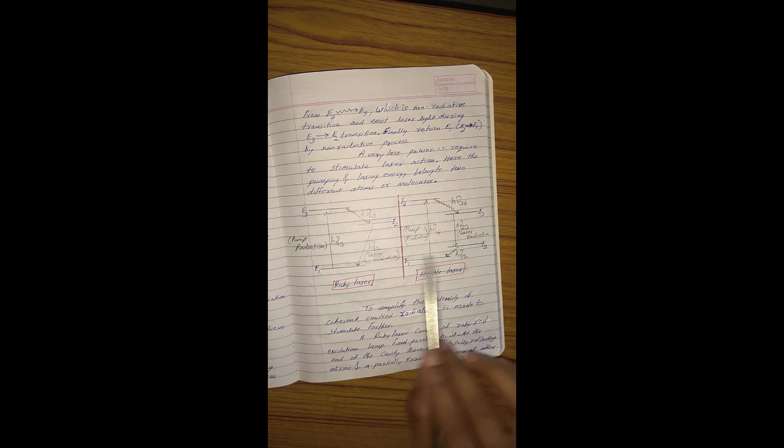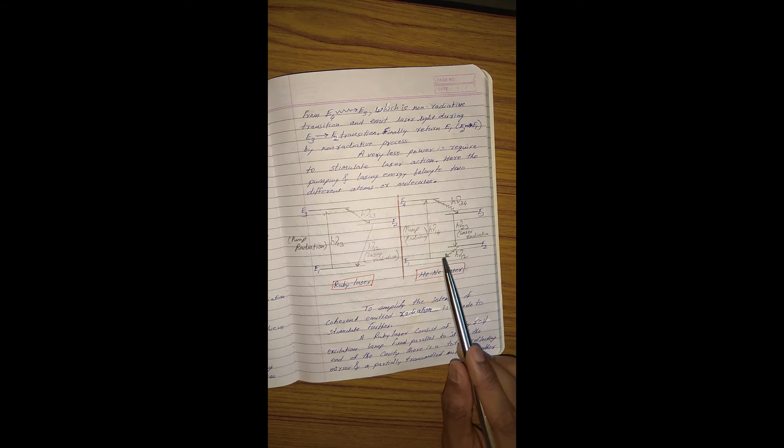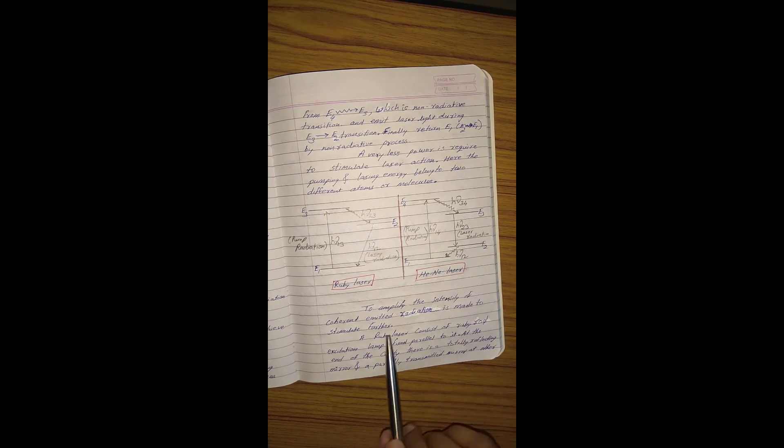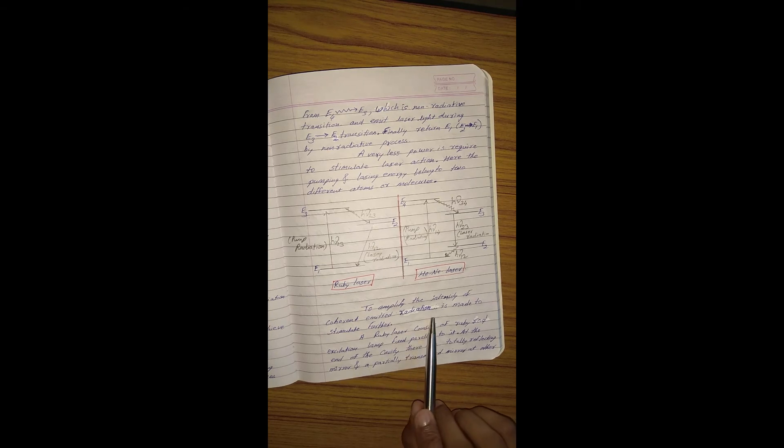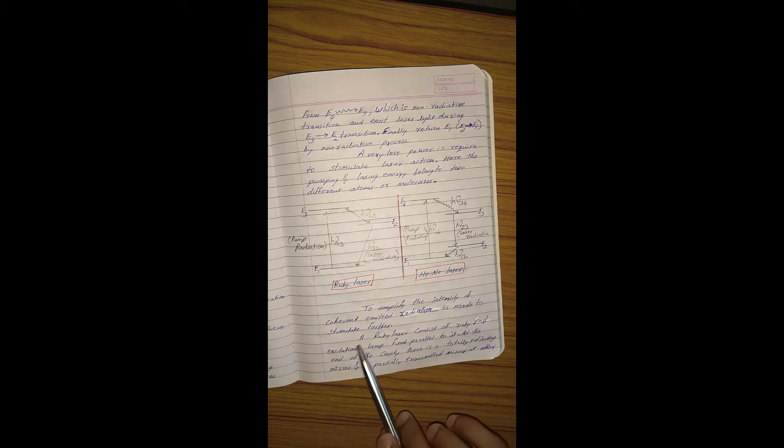During this process, light is generated. Now our job is to amplify because we want high intense light. To get this high intense light, we need to amplify the light by making stimulated emission occur further.